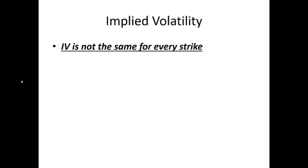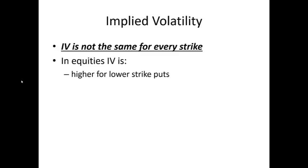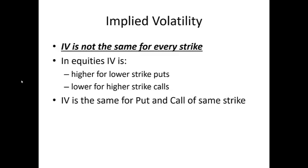Now let's look at three fundamental principles of implied volatility. One: IV is not the same for every strike. Two: in equities and equity indices like Nifty and Bank Nifty, IV is higher for lower strikes and lower for higher strikes. For example, if Nifty is at 10,500, a 10,300 or 10,200 strike will have a higher IV than a 10,800 or 10,900 strike. Note that this specifically applies to equities and equity indices.